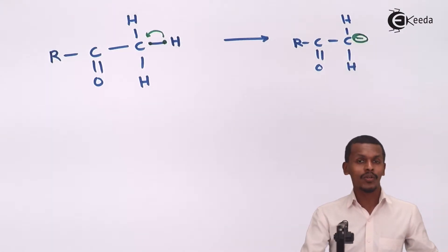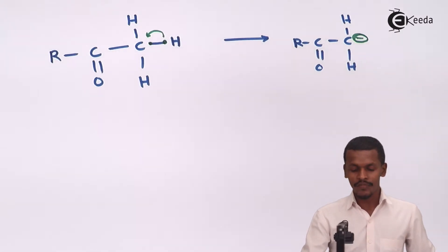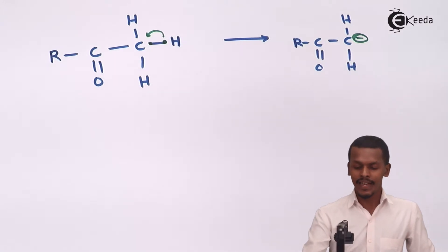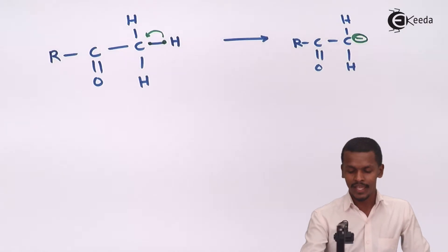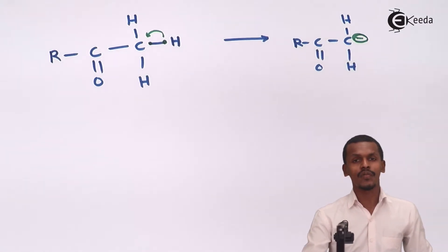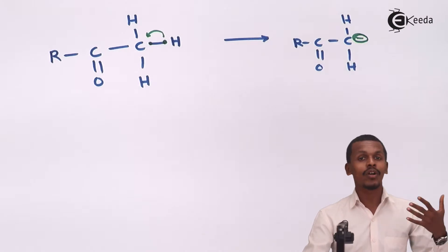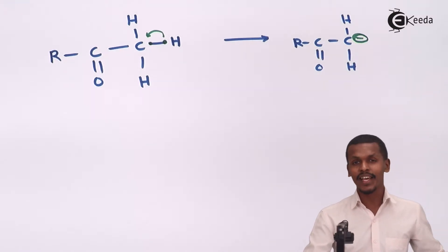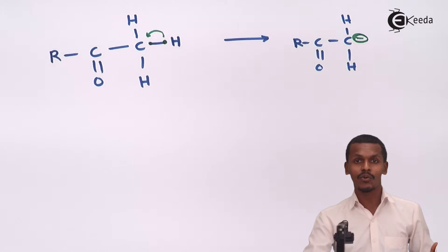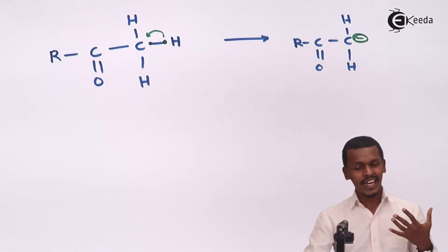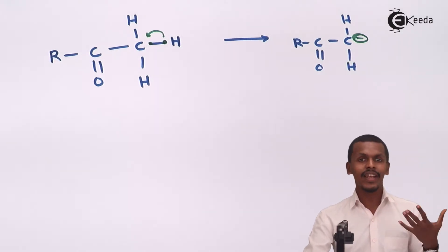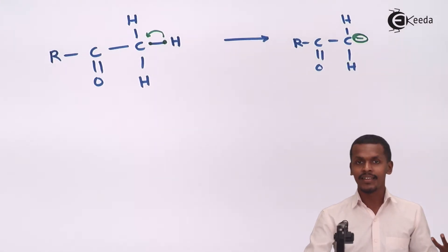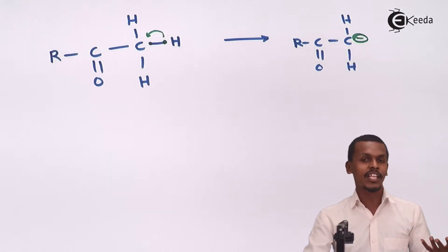This is similar to how the Carbocation was formed via heterolytic fission, but opposite in nature. Because the carbanion has one extra electron, it is not electron-deficient like the Carbocation — it is an electron-rich species. That is why it carries a negative charge on carbon, and it follows sp3 hybridization.